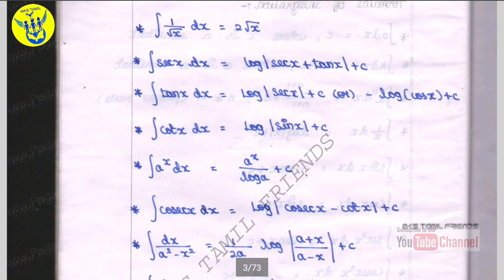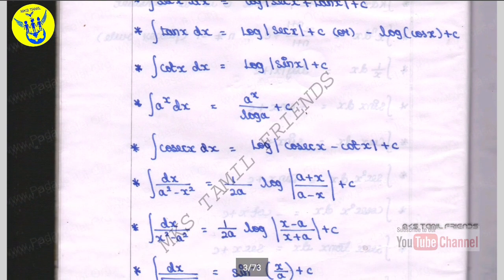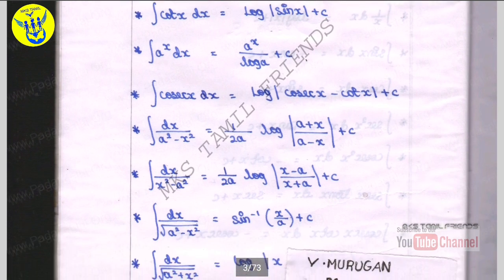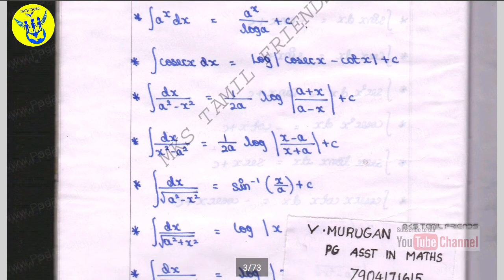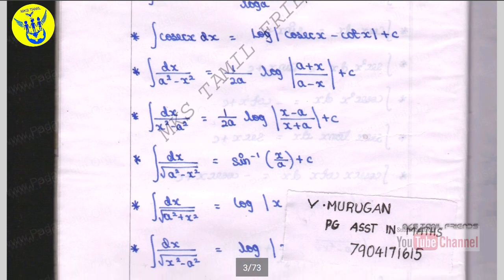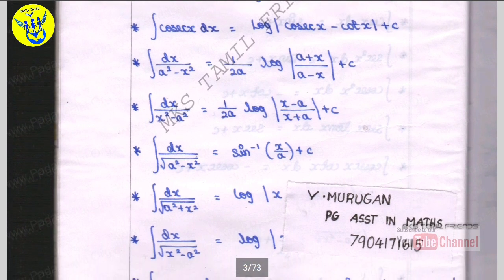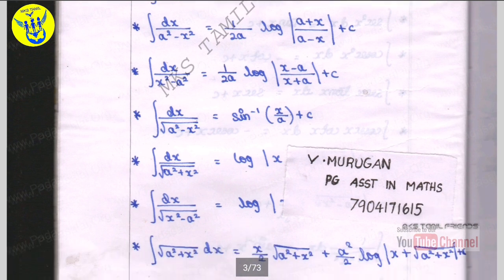Integral dx by a square minus x square is equal to 1 by 2a log a plus x by a minus x plus c. Integral dx by x square minus a square is equal to log modulus x plus root of x square minus a square plus c.